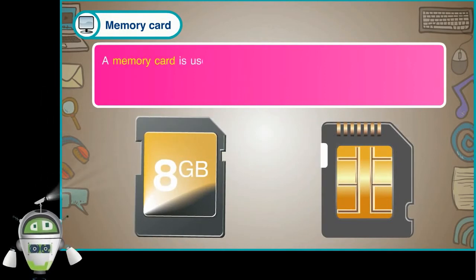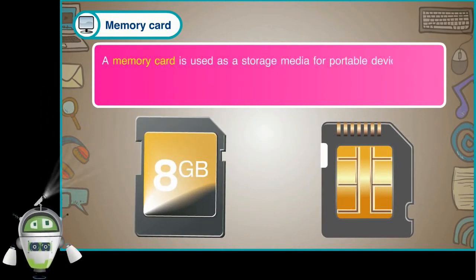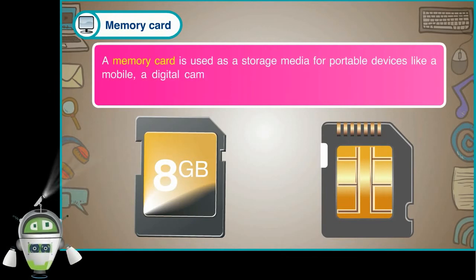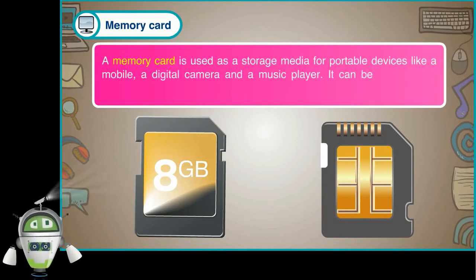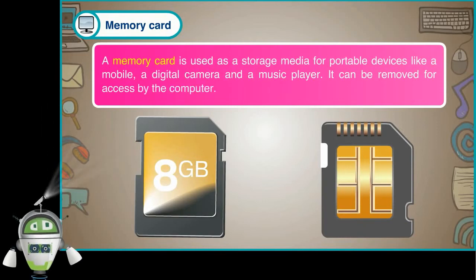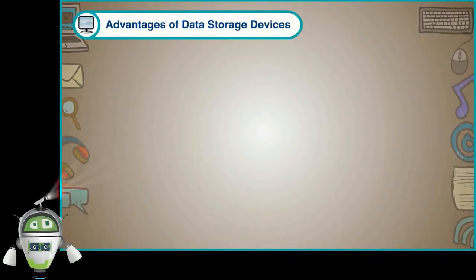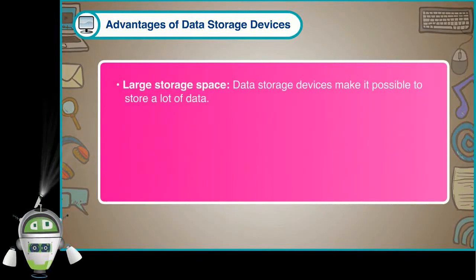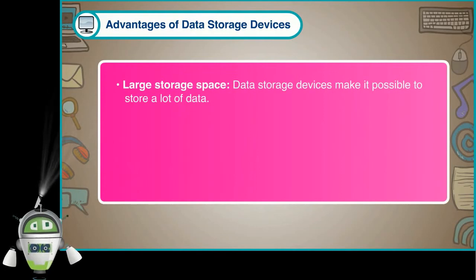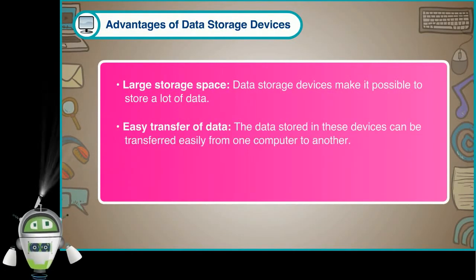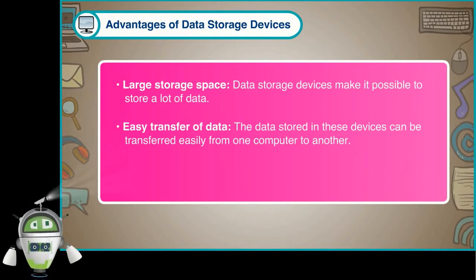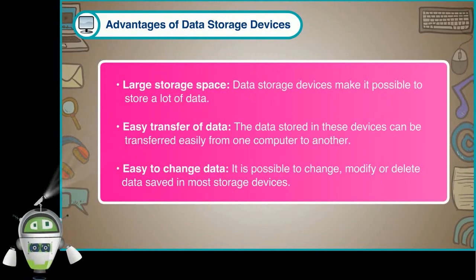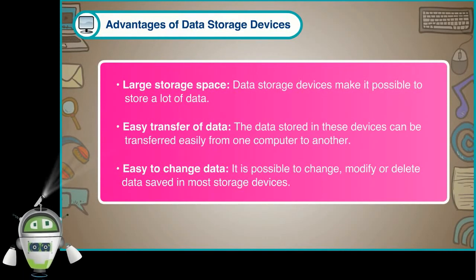A memory card is used as a storage media for portable devices like a mobile, a digital camera and a music player. It can be removed for access by the computer. Advantages of data storage devices: they provide large storage space, making it possible to store a lot of data. Data stored in these devices can be transferred easily from one computer to another. It is also possible to change, modify or delete data saved in most storage devices.